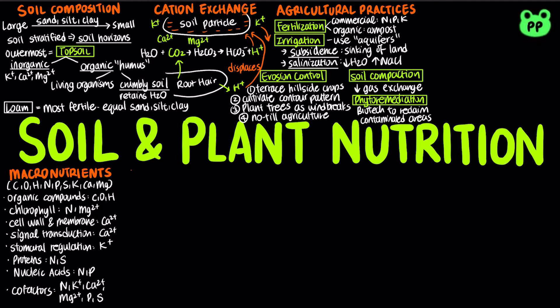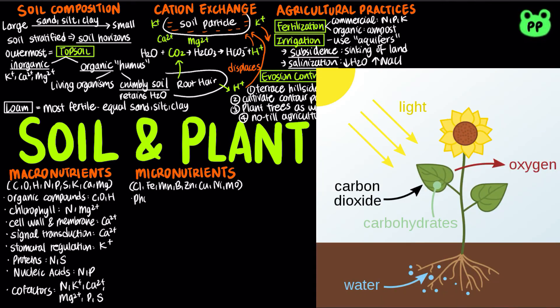Plants also require eight micronutrients in very small amounts, which are chlorine, iron, manganese, boron, zinc, copper, nickel, and molybdenum. Chlorine, iron, and manganese serve as cofactors for photosynthetic reactions.